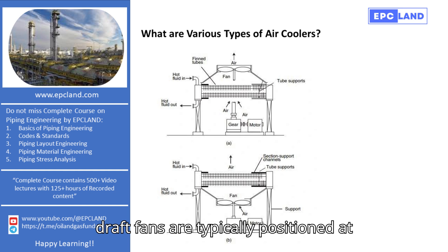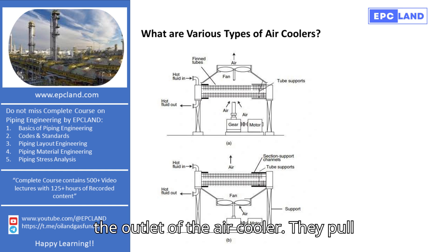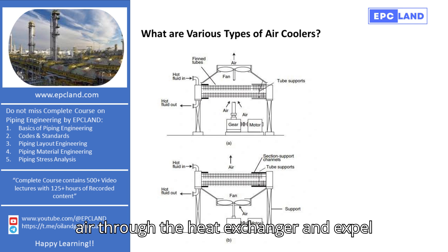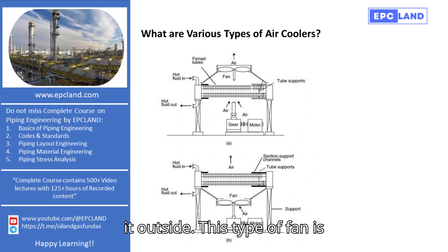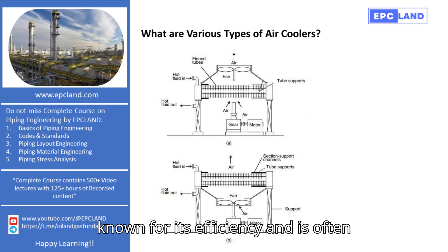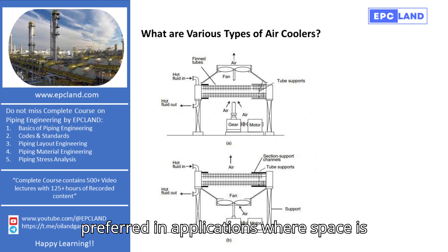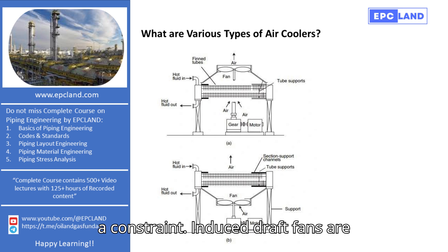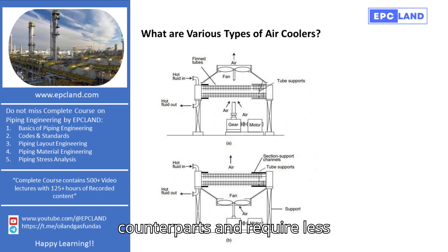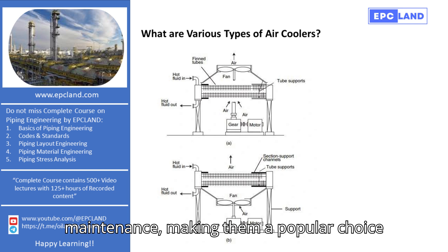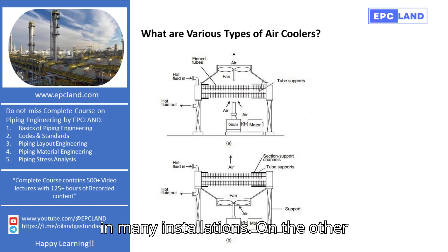Induced draft fans are typically positioned at the outlet of the air cooler. They pull air through the heat exchanger and expel it outside. This type of fan is known for its efficiency and is often preferred in applications where space is a constraint. Induced draft fans are quieter compared to their forced draft counterparts and require less maintenance, making them a popular choice in many installations.